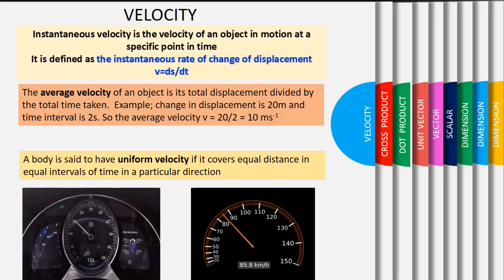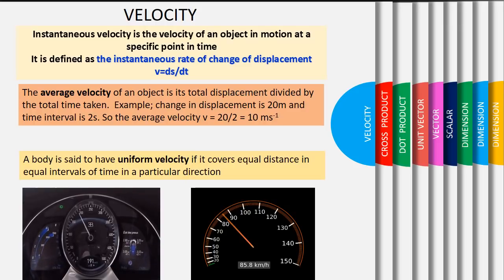Let's say a car is moving at 85.8 km per hour for 15 seconds. We can say that the car is moving at uniform velocity 85.8 km per hour for 15 seconds.